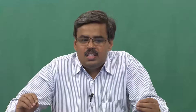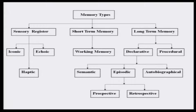Sensory memory includes iconic and echoic memory, and we did refer to haptic memory, noting that iconic and echoic memory have been researched well and therefore we talked about them at length. Within short-term memory we also had discussion about working memory. Long-term memory can be divided into declarative and procedural memory. Looking at memory in terms of semantic memory, episodic memory, and autobiographical memory — further, episodic memory can be divided into prospective and retrospective memory.